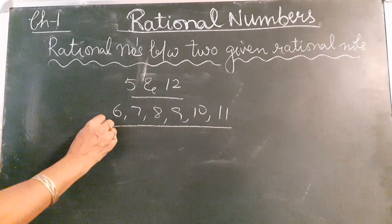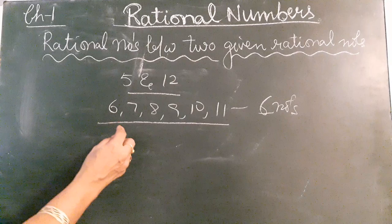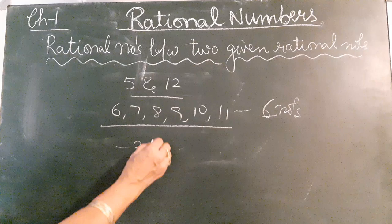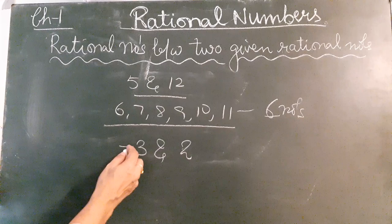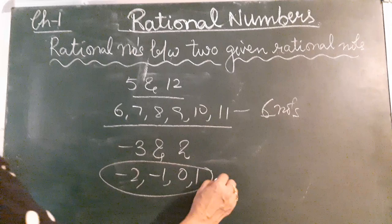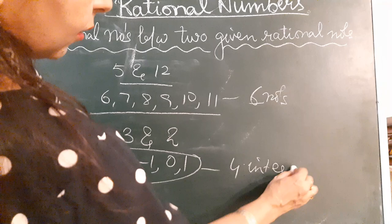And if anybody asks you to write down the integers between minus 3 and 2, you will give the answer minus 2, minus 1, 0, and 1. These are 4 integers — also a limited or definite number.